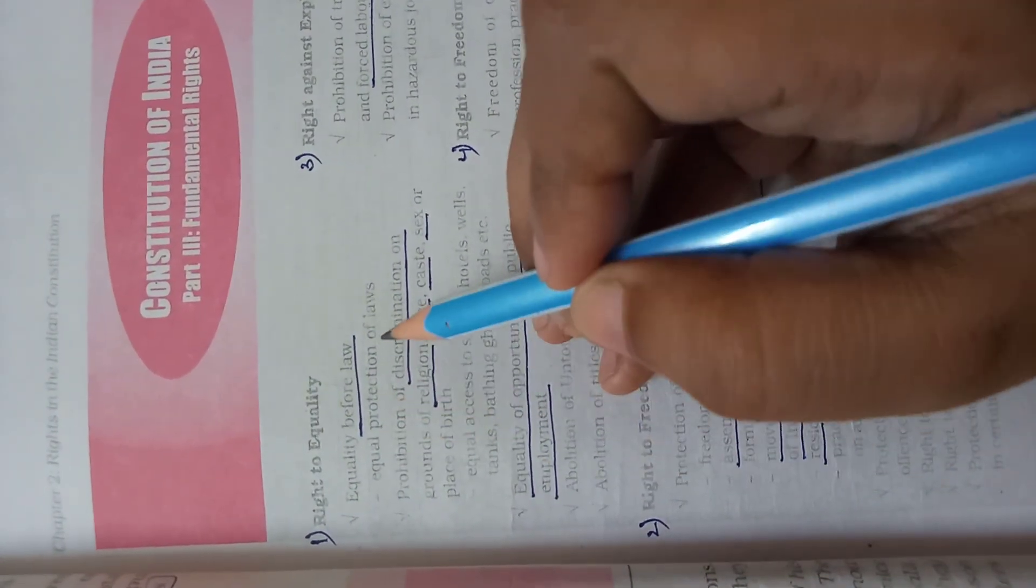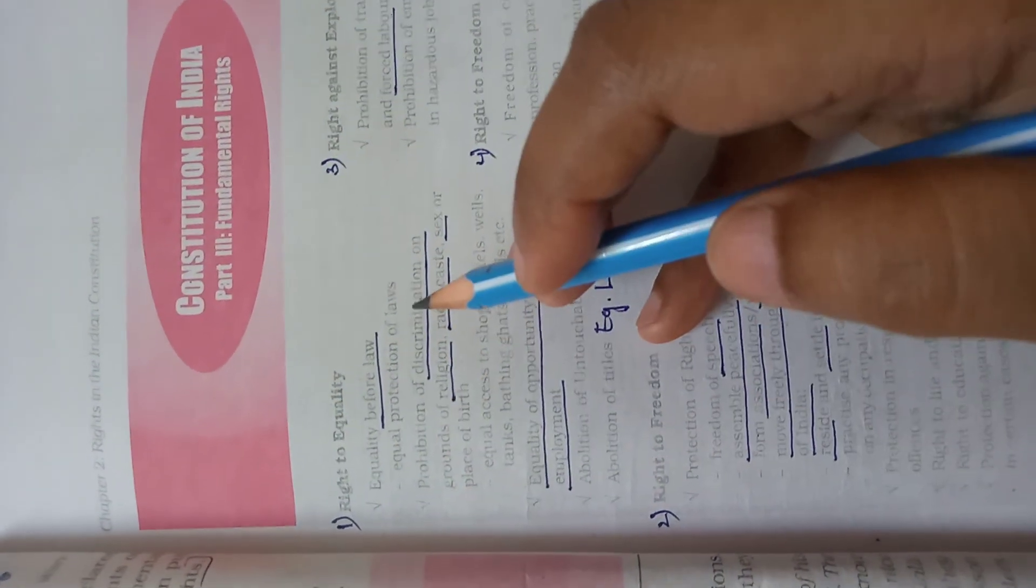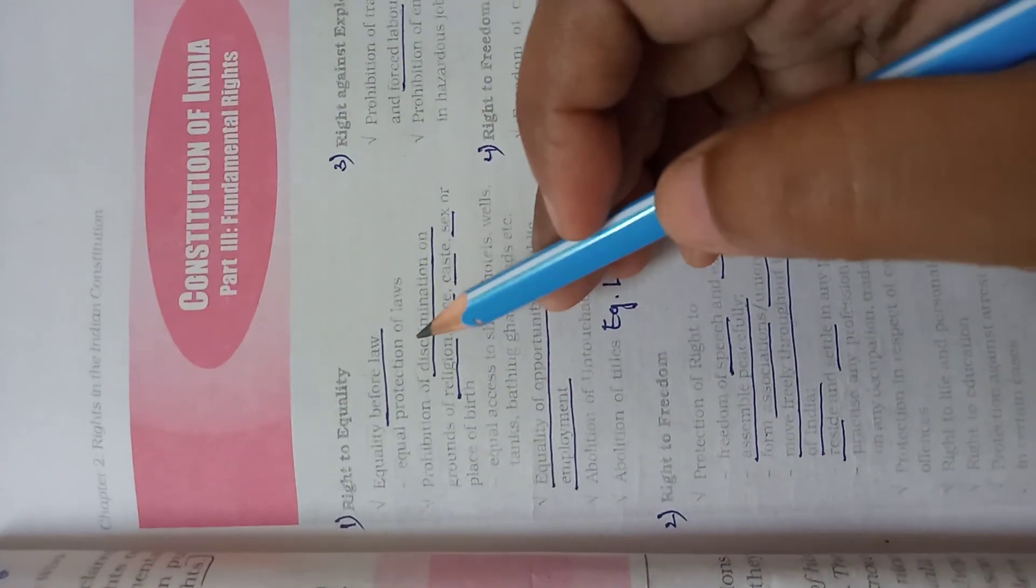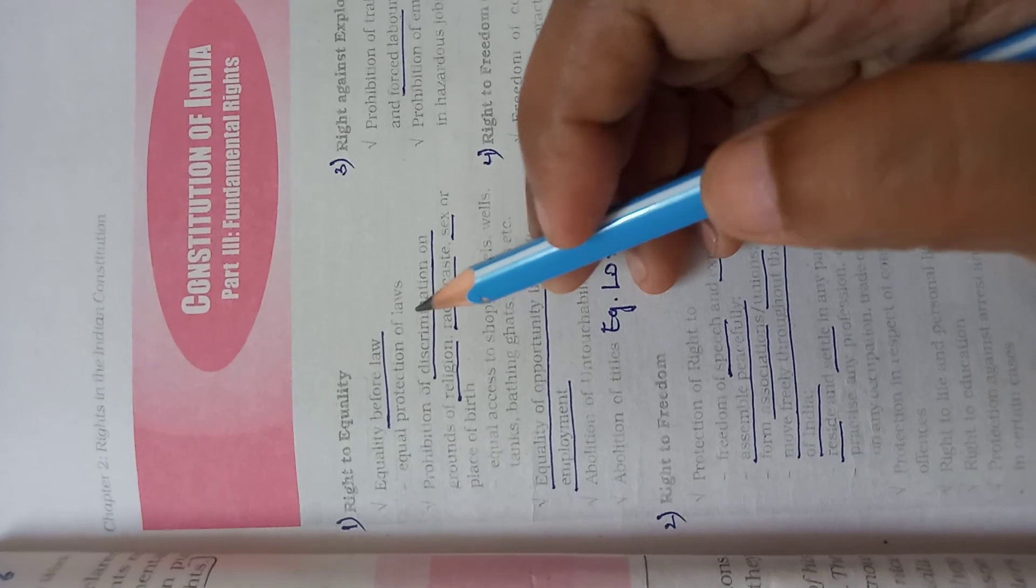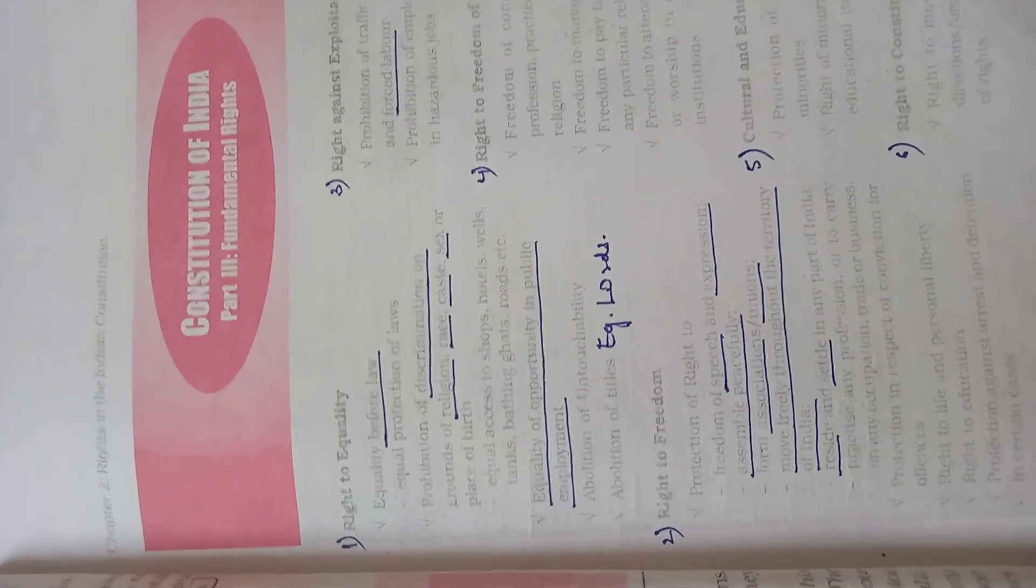Equal protection of laws. Firstly, everyone is equal in front of laws, even if it is a rich guy or a poor person. Secondly, equal protection of laws means everyone will get equal protection of laws. If anyone's fundamental rights are violated, everyone will be equally protected.